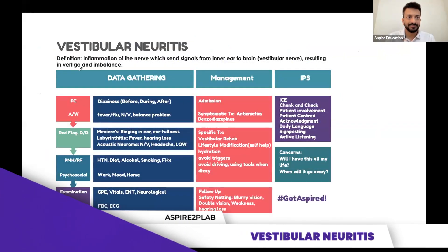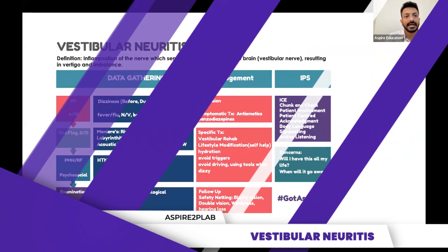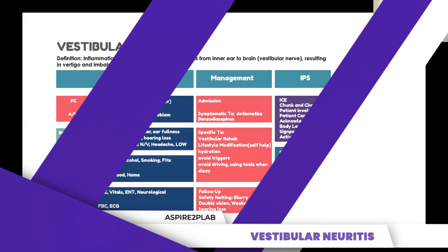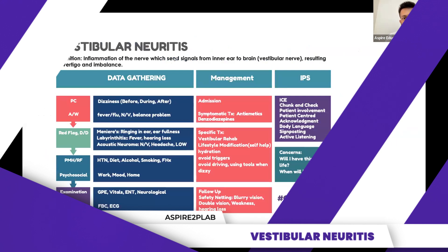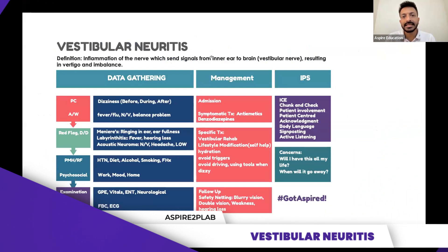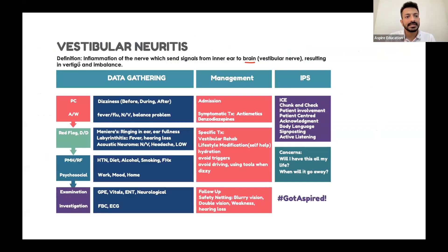Vestibular Neuritis. What is it? It is the inflammation of the nerve which sends signals from the inner ear to the brain — that's your vestibular nerve — and that results in vertigo and imbalance.